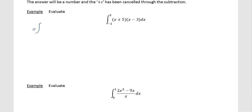The first thing I'm going to do in this example is multiply out the brackets to get the function in index form. When I multiply it out and tidy it up, I get x squared plus 2x minus 15, and that's being integrated with respect to x. We are now good to go.